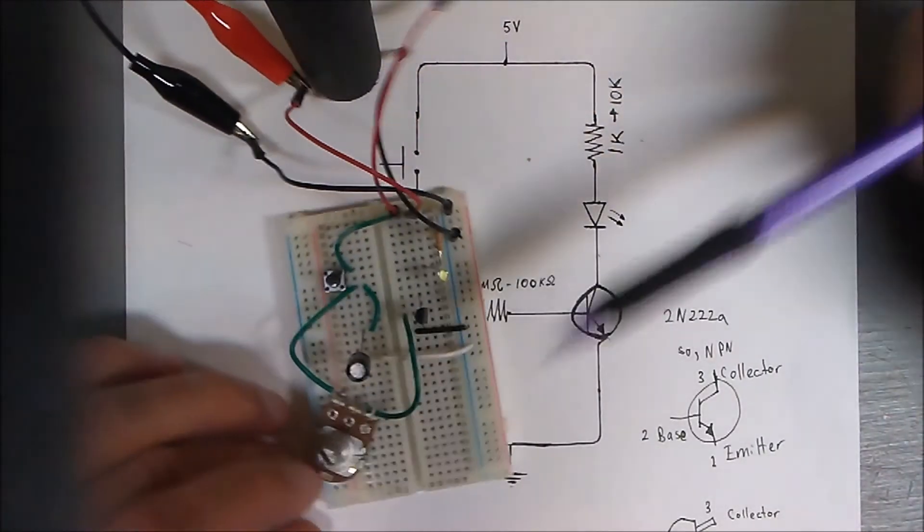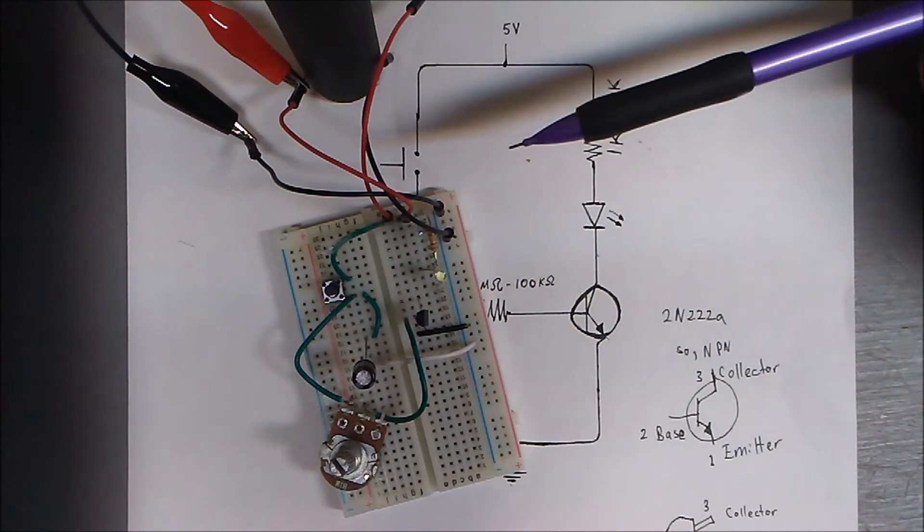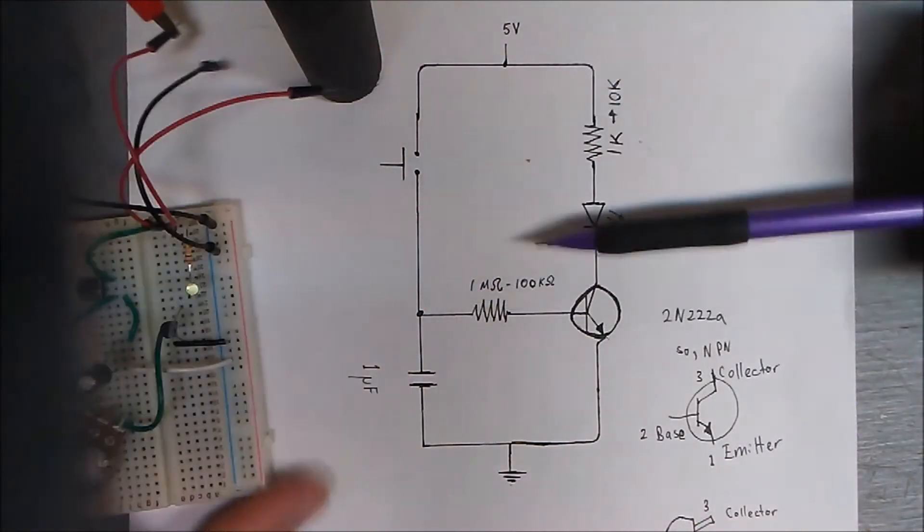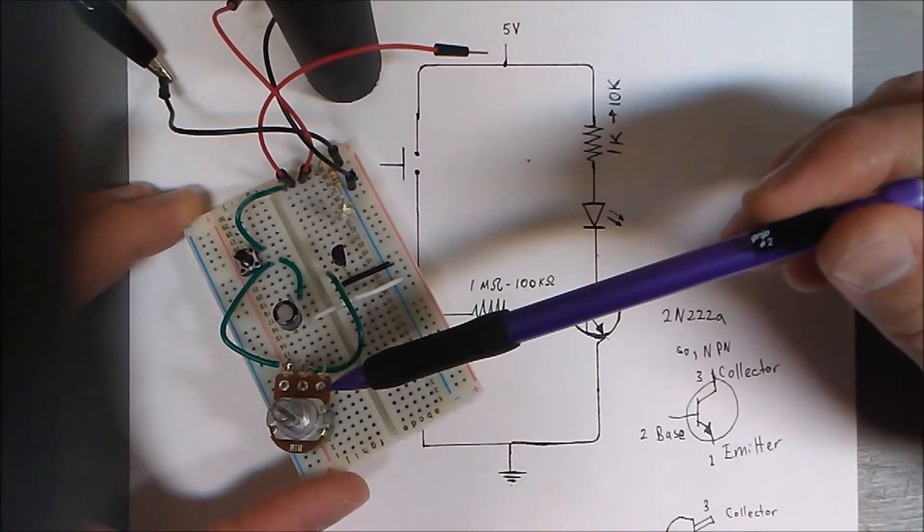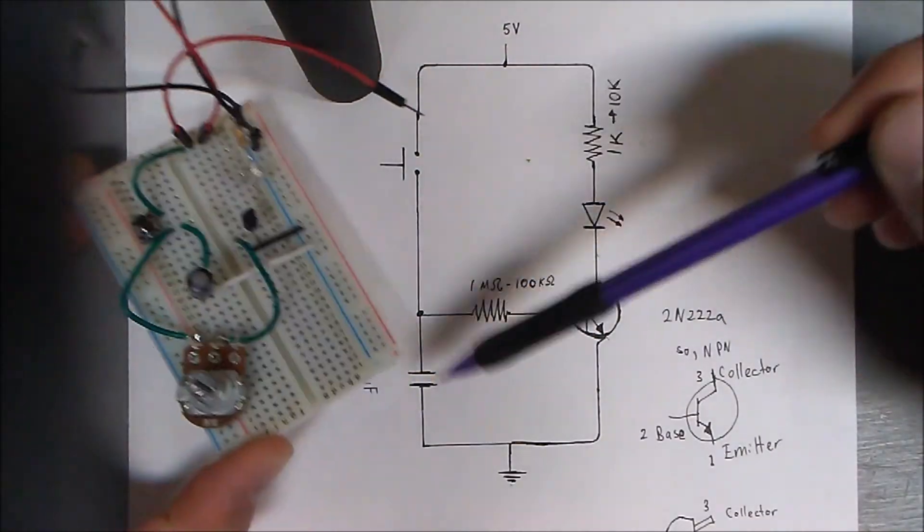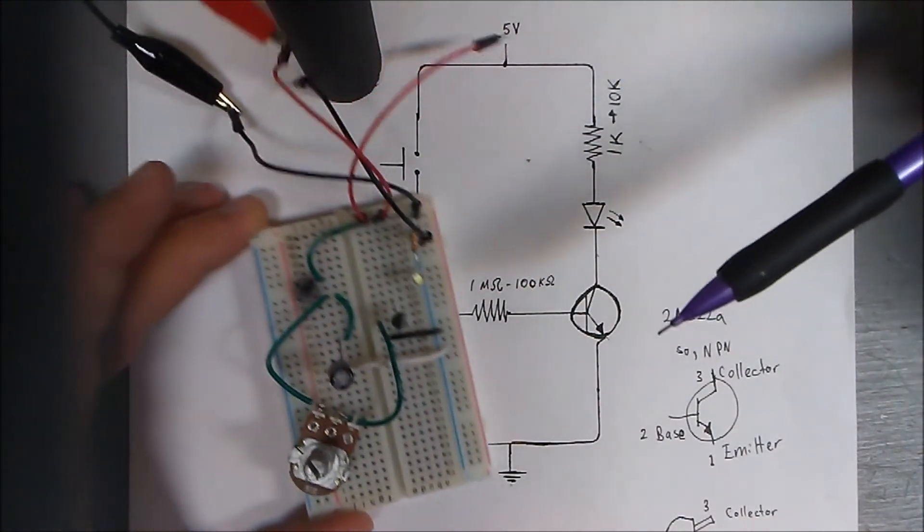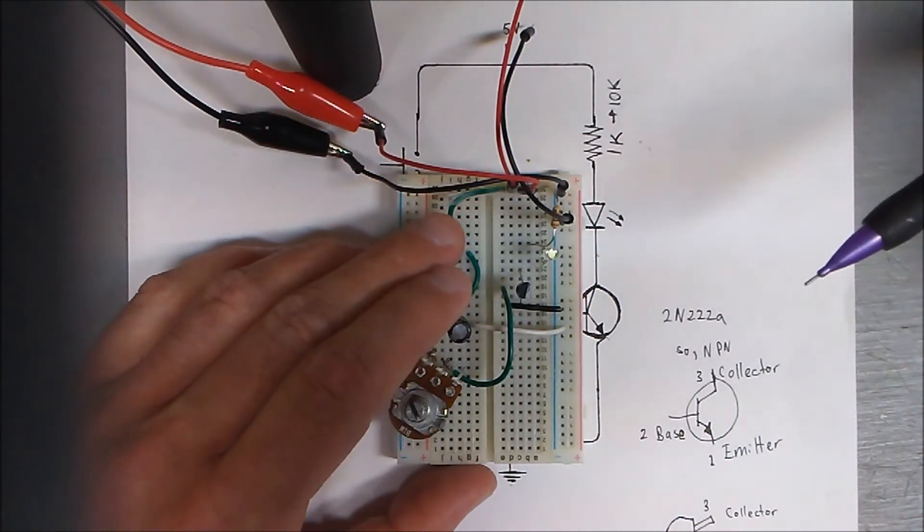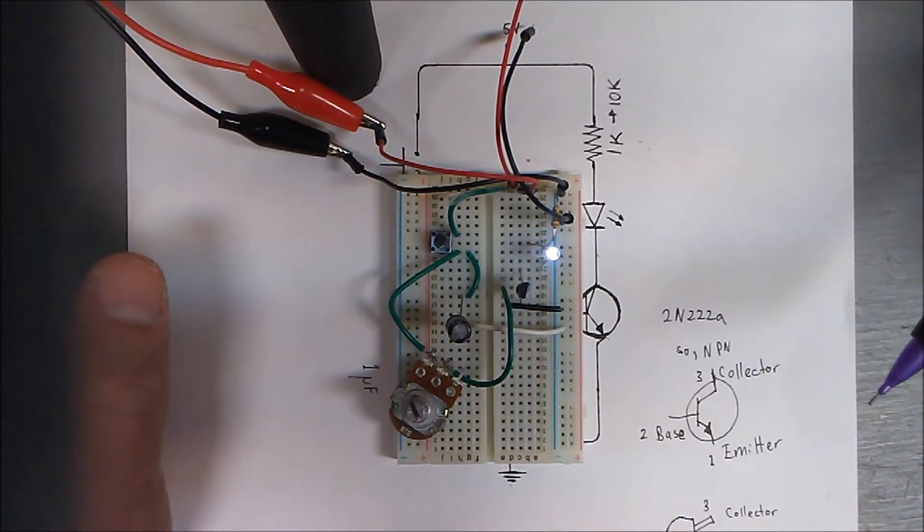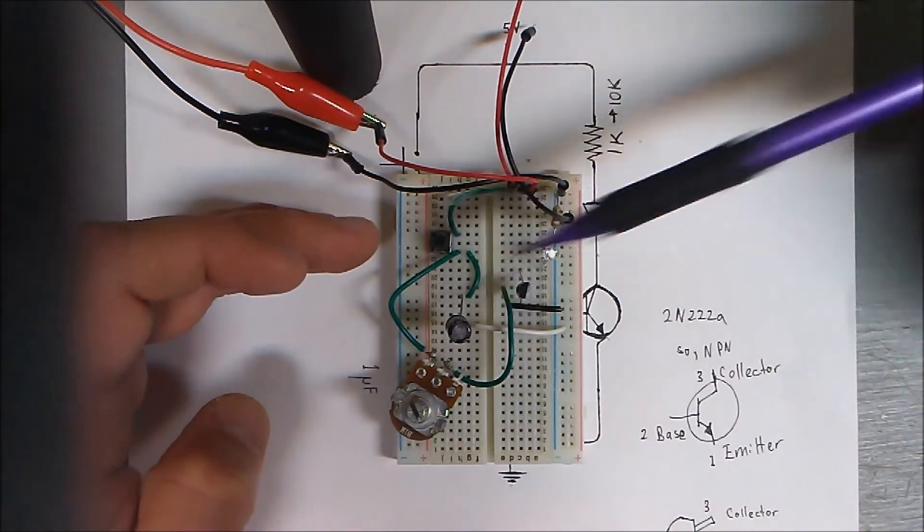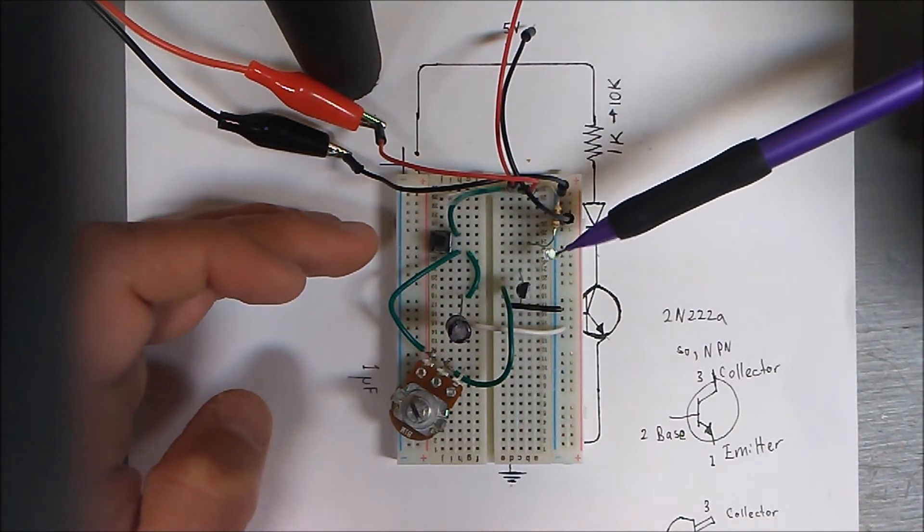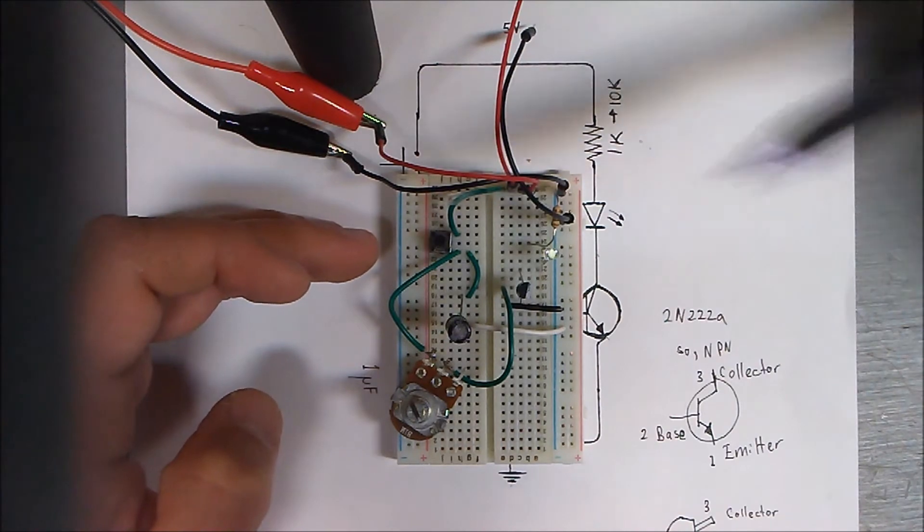The circuit I built pretty much replicates what is shown in the schematic diagram. In my case I used the 10k, I put the one mega ohm resistor in, and I'm using one microfarad capacitor. I'll push the button.